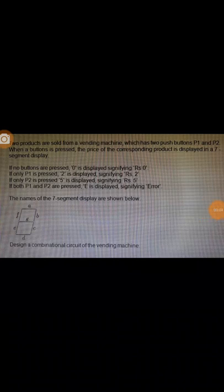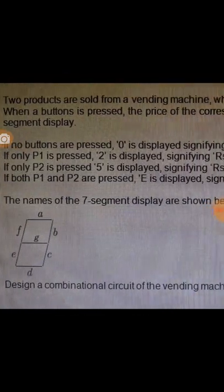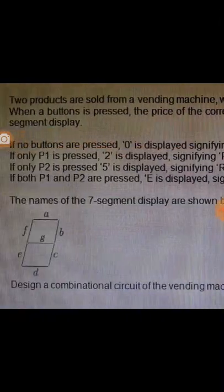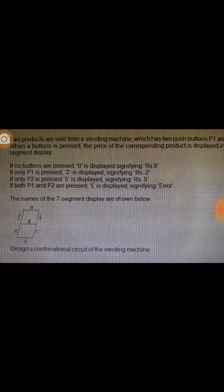In this video, we are going to design a combinational circuit for a seven segment display of a very simple vending machine. Two products are sold from a vending machine which has two push buttons P1 and P2. When a button is pressed, the price of the corresponding product is displayed on a seven segment display. If no buttons are pressed, zero is displayed. If P1 is pressed, 2 is displayed. If P2 is pressed, 5 is displayed. If both P1 and P2 are pressed, E is displayed signifying error.